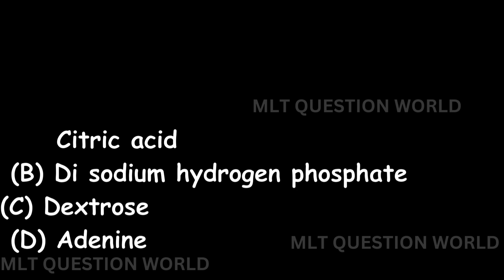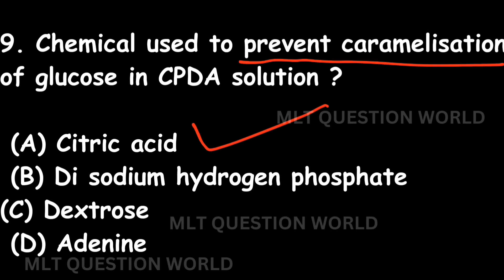Question nine: Which content helps to prevent the caramelization of glucose in CPDA? The right answer is Option A: Citric acid. We have already learned this in the Blood Bank Technician exam preparation, which you can watch from the playlist.